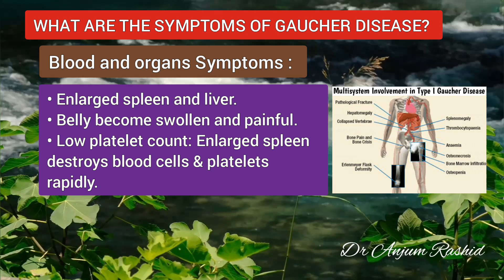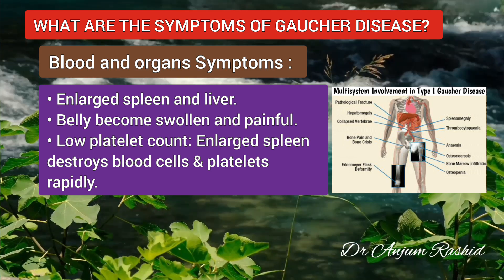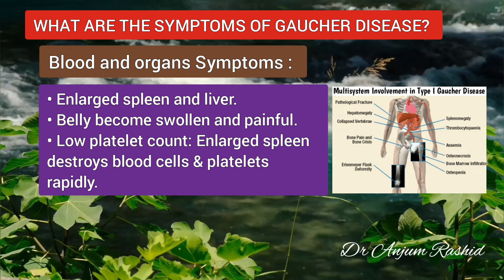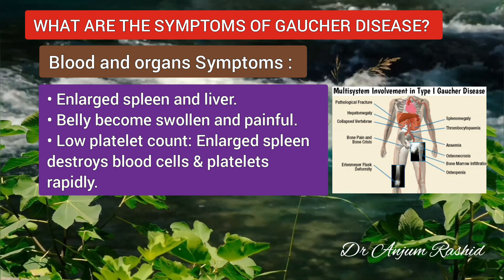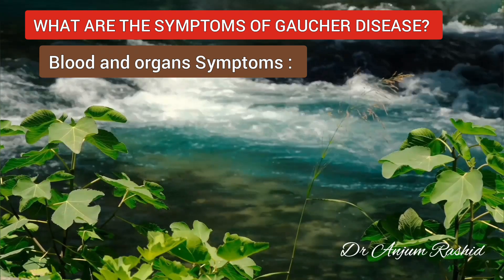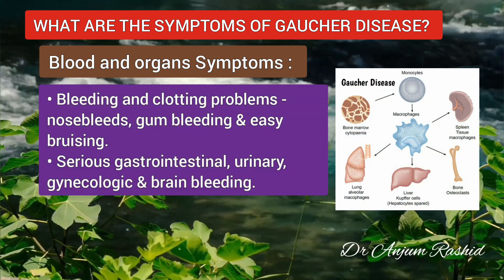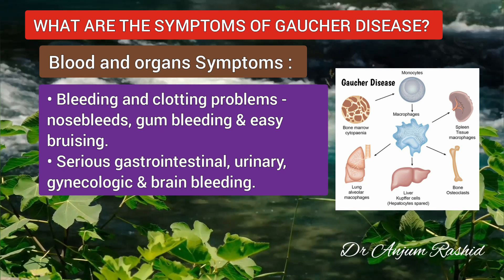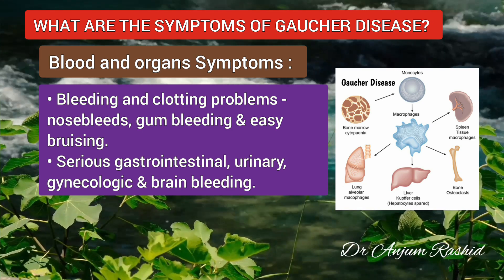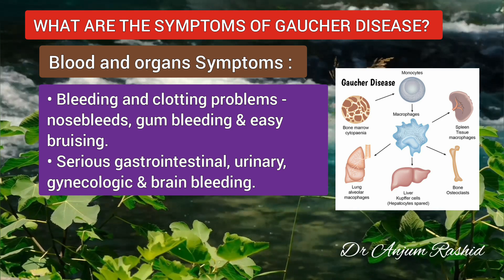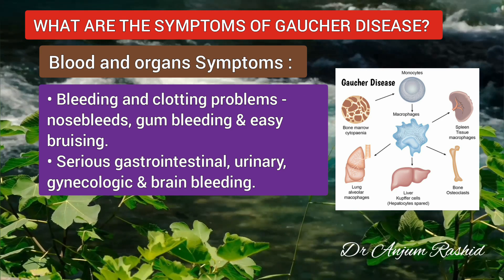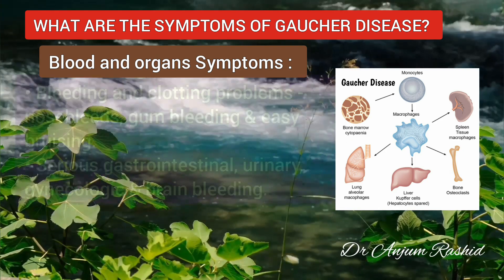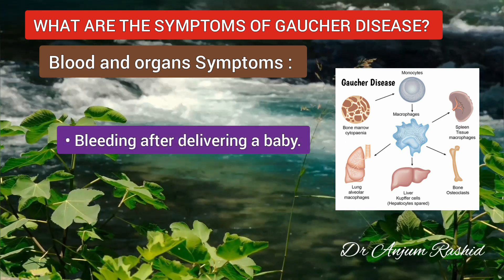The second symptom is low platelet count. A normally functioning spleen disposes of old blood cells, but a spleen enlarged by Gaucher disease destroys blood cells too rapidly, including the platelets responsible for clotting even after minor injuries. This leads to bleeding and clotting problems, such as frequent nosebleeds, gum bleeding and easy bruising. Sometimes patients can have more serious gastrointestinal, urinary, gynecologic and brain bleeding issues, and bleeding after delivering a baby is also common.